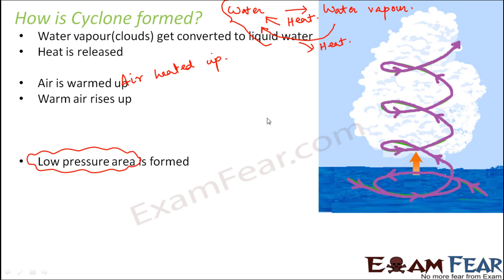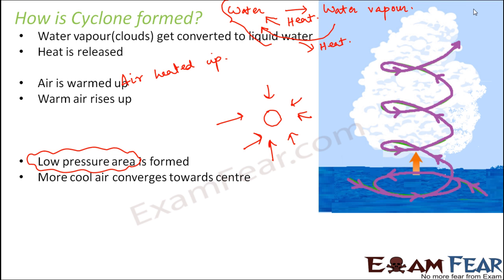Due to this pressure drop, you now have a low pressure area at one point while everywhere else is high pressure. All the air from the high pressure areas will try to move towards the low pressure area, so more and more cool air converges towards the center — which is nothing but the low pressure area — and that becomes the center of the cyclone.